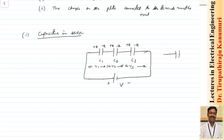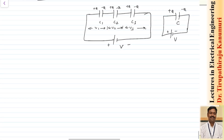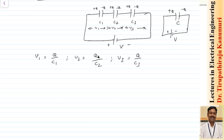I want to calculate the equivalent value of capacitance such that the terminal conditions remain the same — voltage plus minus is there, plus Q and minus Q on the equivalent capacitor. Since all capacitors are in series, V1 equals Q divided by C1, V2 equals Q divided by C2, and V3 equals Q divided by C3. The terminal voltage V is the sum of the voltage drops: V equals V1 plus V2 plus V3, which equals Q times (1/C1 plus 1/C2 plus 1/C3).